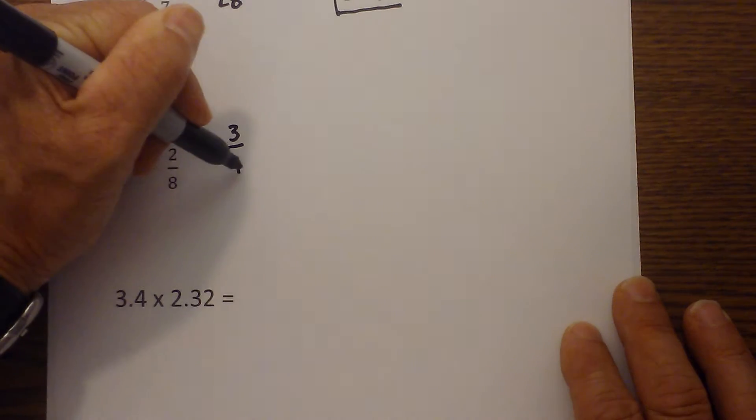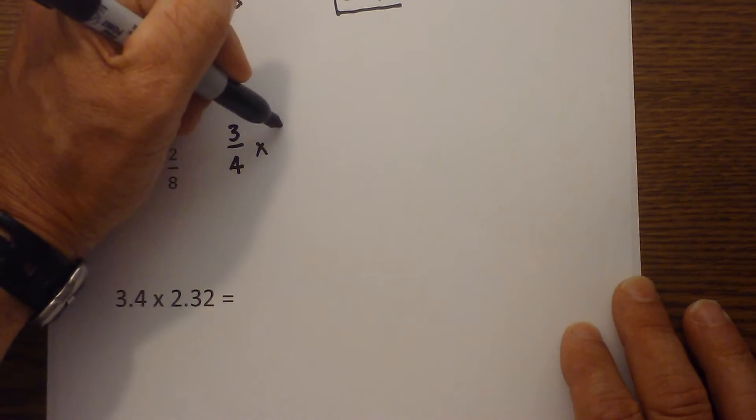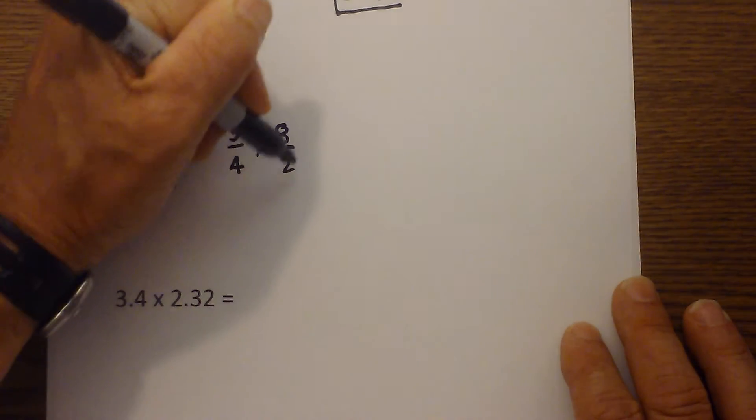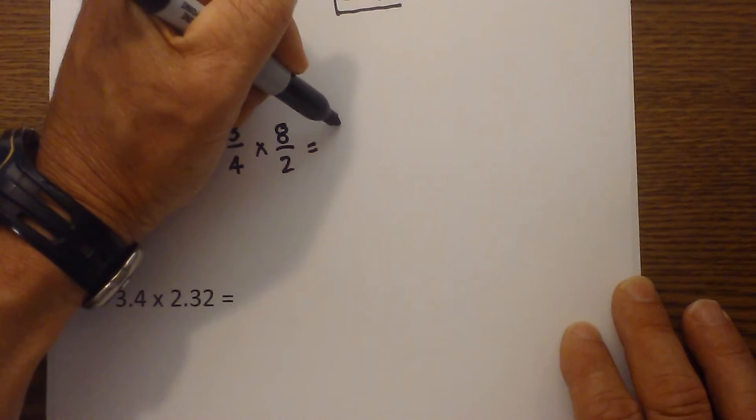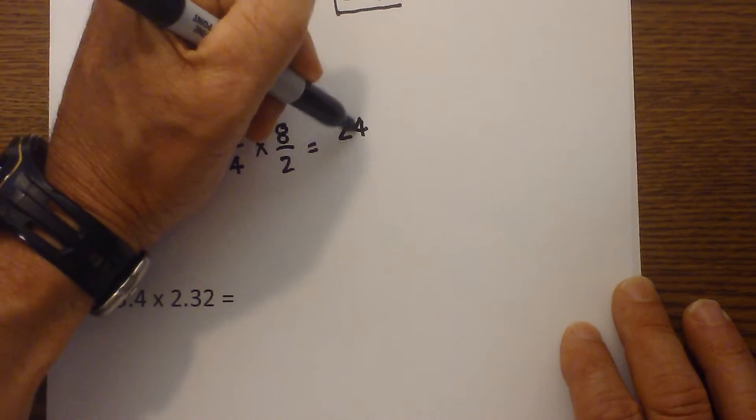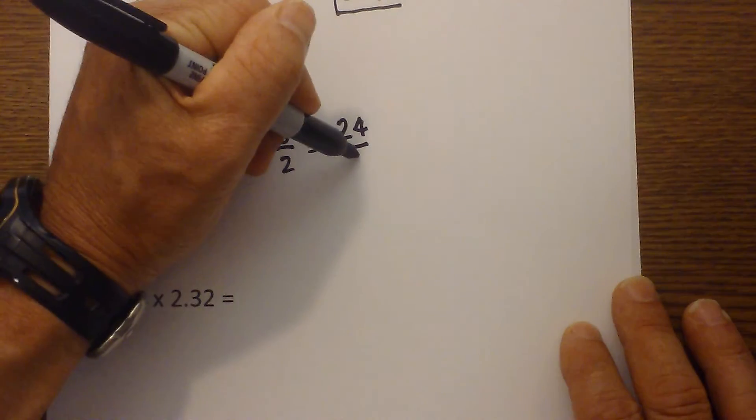So it would be 3 fourths times 8 over 2. And then apply the rules of multiplication. 8 times 3 is 24, 4 times 2 is 8.